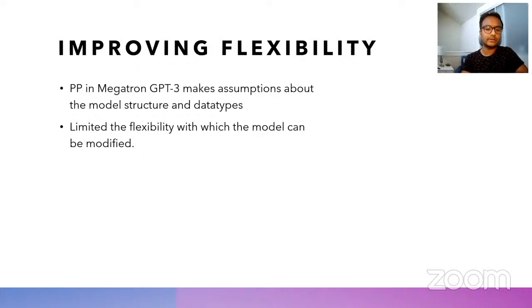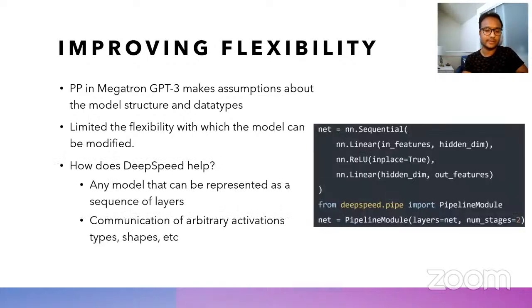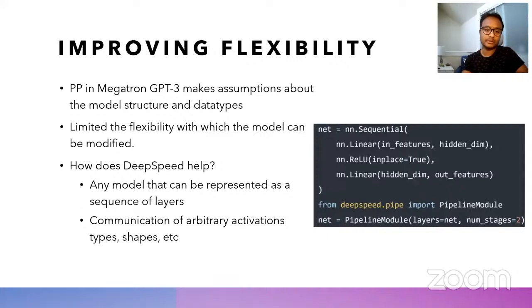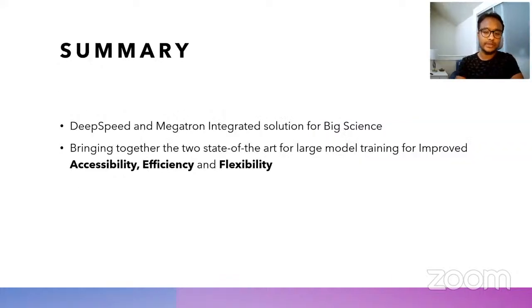The pipeline parallelism implementation in Megatron makes certain assumptions about the model structure and data types that can limit the flexibility in which the model can be modified. Through integration with DeepSpeed, we remove such assumptions, supporting any model that can be represented as a sequence of layers. In addition, the pipeline parallelism in DeepSpeed also supports communication of arbitrary activations and shapes, so model scientists can make changes to the model more freely without worrying about compatibility with pipeline parallelism. With this integration between DeepSpeed and Megatron, we're going past 3D parallelism and bringing in technologies like Zero and heterogeneous memory support that can altogether help accessibility, efficiency, and flexibility for BigScience.